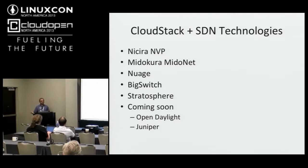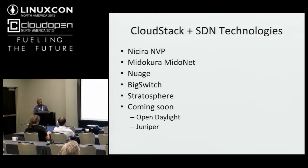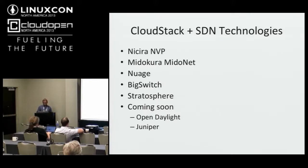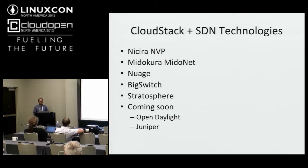CloudStack has an extensible network model, and networking is one of its strong points. Since CloudStack moved to the Apache Foundation, integrations include NICIRA as the first, followed by Midokura, Nuage, Big Switch, and Stratosphere in Japan. Juniper wants to donate an integration with Contrail, and soon an OpenDaylight integration will begin as well. All these SDN technologies support network virtualization in some form and integrate with Apache CloudStack.